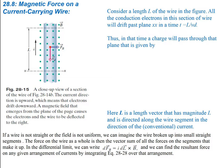Let's consider a length of wire, L, as shown in the figure. All the conduction electrons in this section of wire will drift past the plane at XX in some amount of time. The time is just the length divided by the drift velocity, which comes from velocity equals distance over time. The distance is L, the length of the wire, and we use the drift velocity because electrons are going in all directions, but the general drift of the charge is going to be along the current.